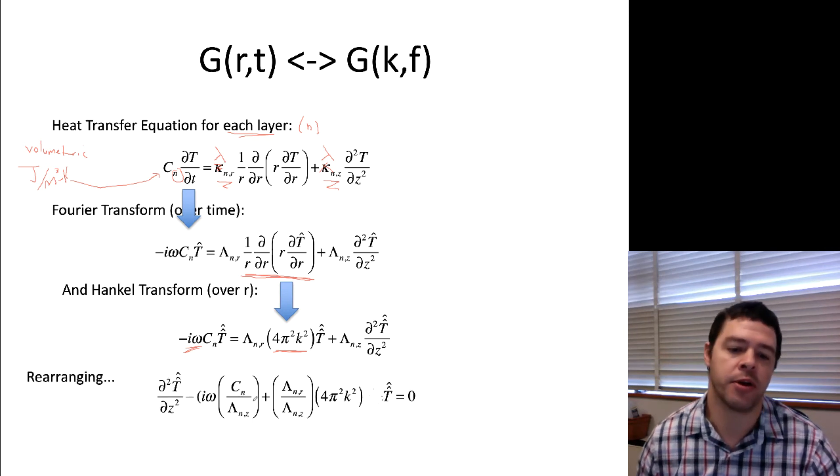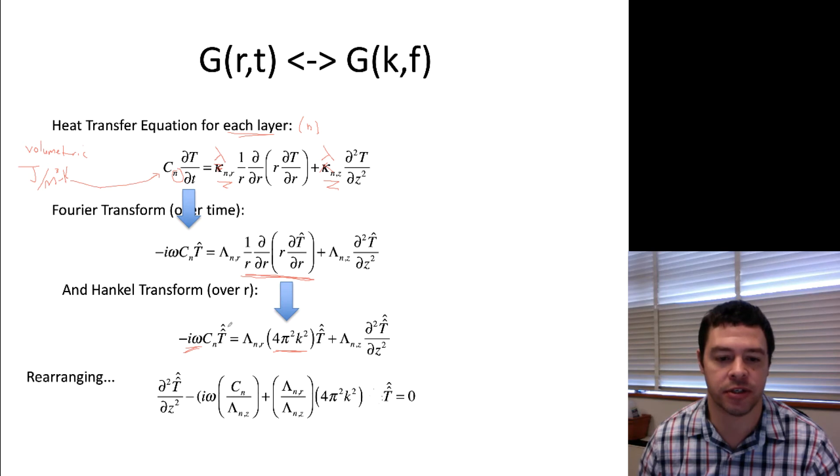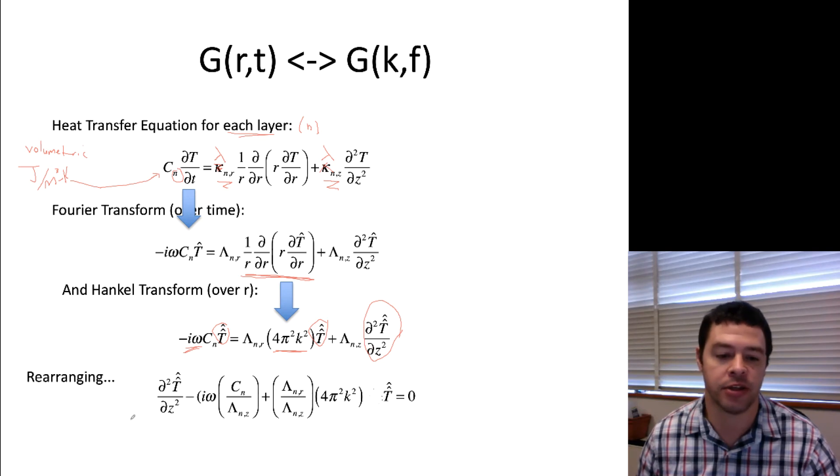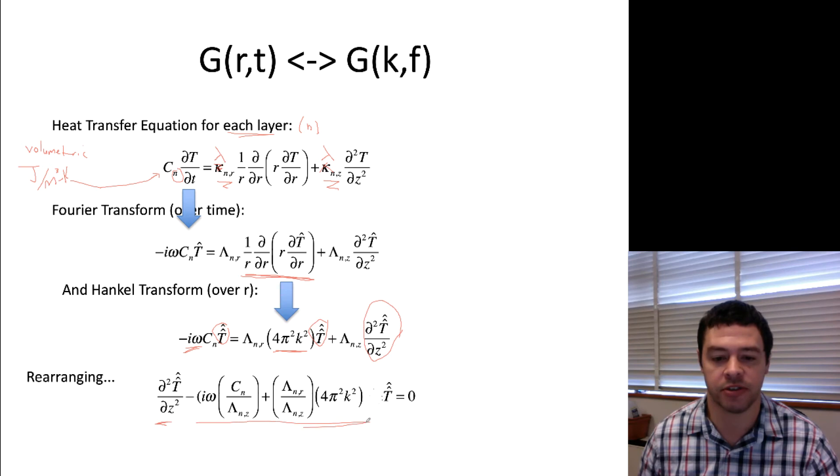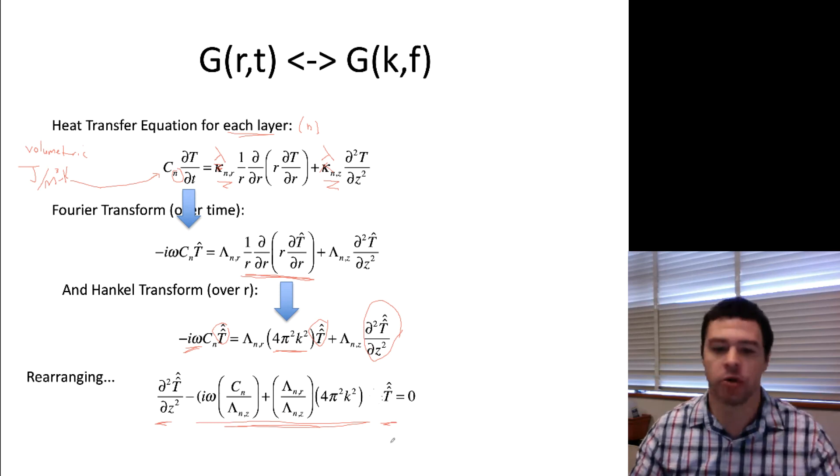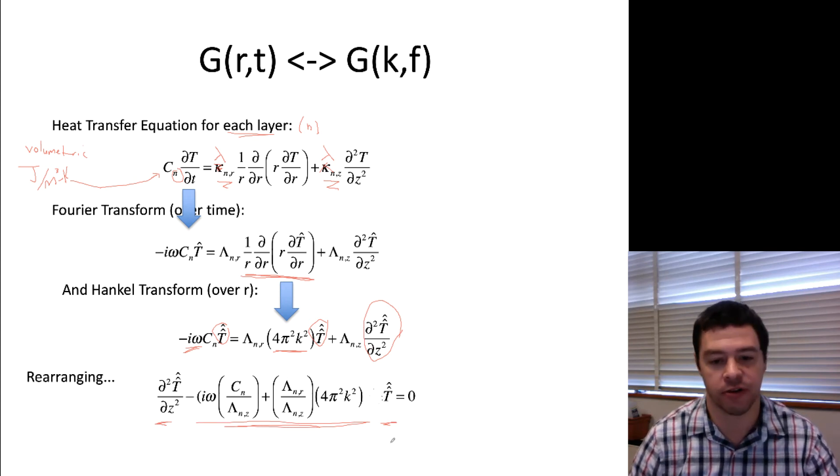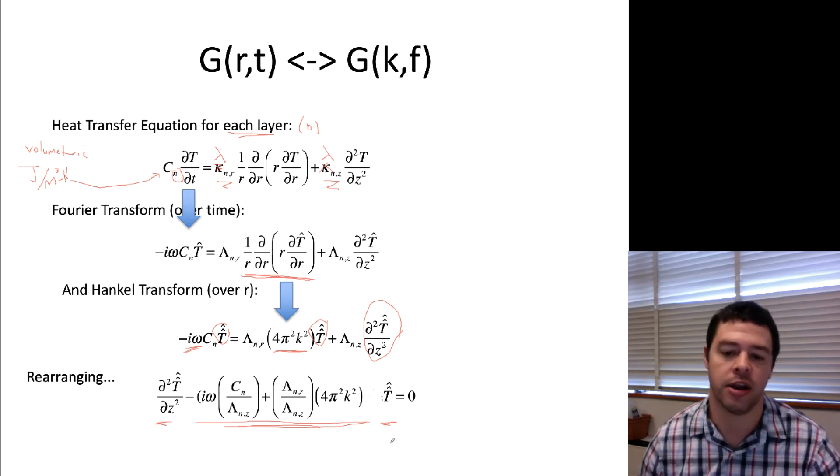So, I can rearrange all that. So, what I'm going to do is I'm going to rearrange everything so that basically I'm going to collect terms that just have to do with the temperature and separately collect terms that just have to do with z. And if I rearrange in that way, I'll get something that involves the second derivative plus a bunch of stuff that acts as a prefactor for the no derivative version of the temperature. And that equals zero. And what's cool about that is that has an analytic solution as a function of z, which I'll write in the next slide.